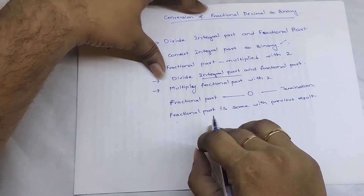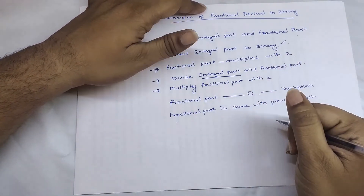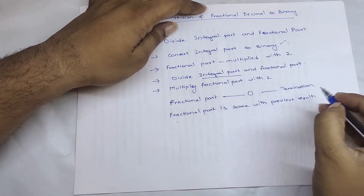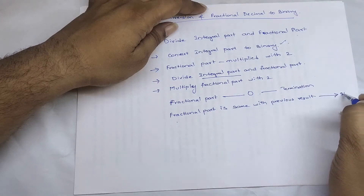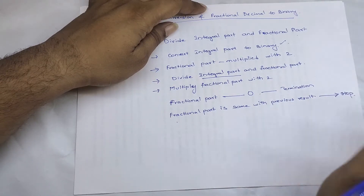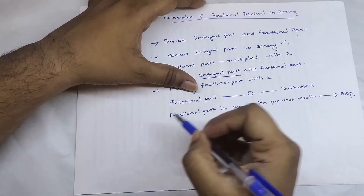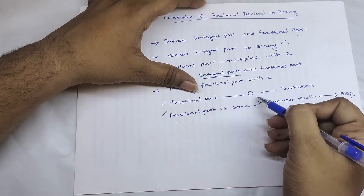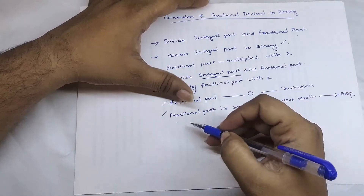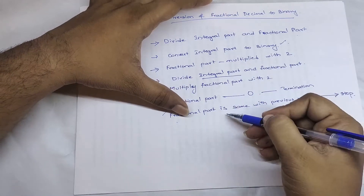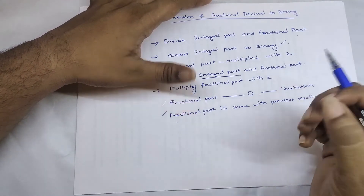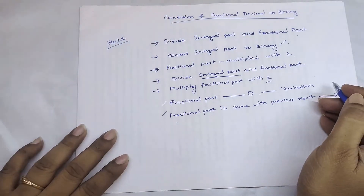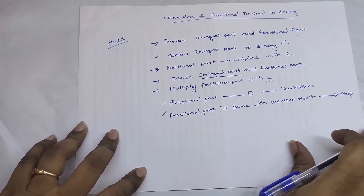If the fractional part is the same as a previous result, then that will be a continuing infinite process, and we can stop the calculations. I will explain both cases. We'll take one example where the fractional part becomes zero after multiplying by two a number of times, and one more example where the fractional part never equals zero even after multiplying by two repeatedly.